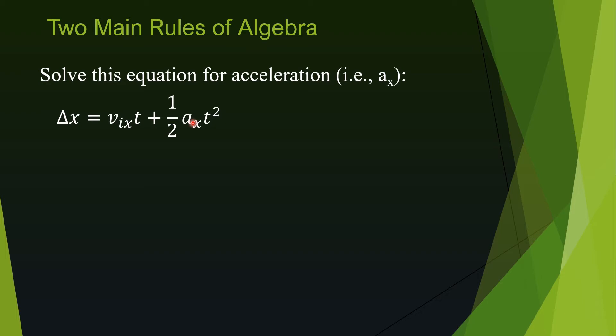Therefore we are using rule number one to move the first term from right to the left. After this, we need to move t squared and the number two from this side to the other side by using rule number two.